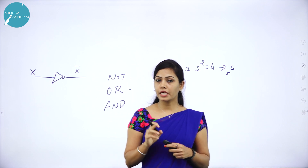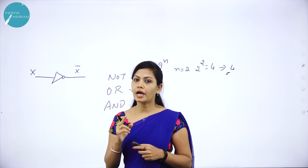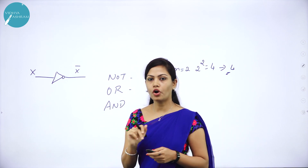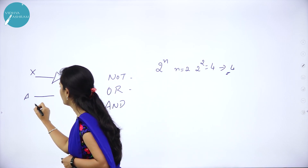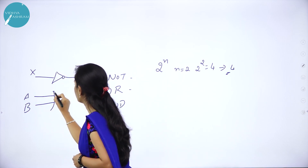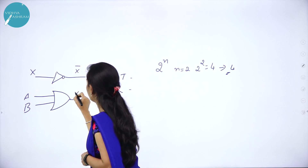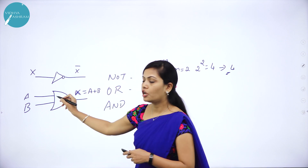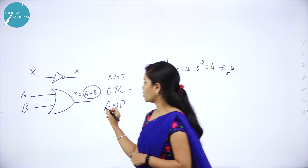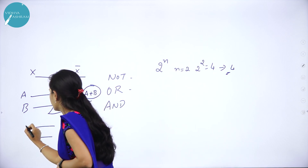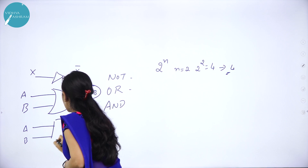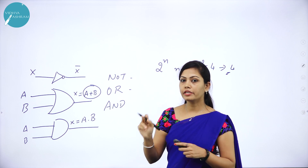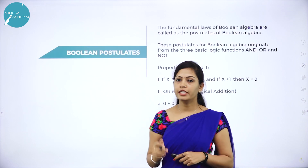Next, OR gate is a gate which has two or more input signals and only one output. This gate gives logical addition. The logical symbol for OR gate consists of two inputs and only one output, so x is equal to a plus b. It gives logical addition. And the logical symbol for AND gate: x is equal to a dot b. So, AND gate gives logical multiplication.